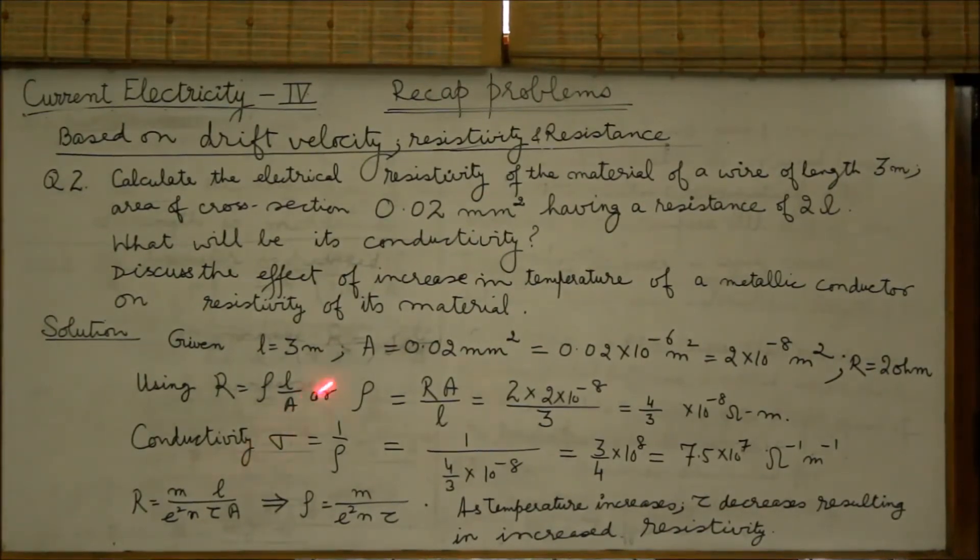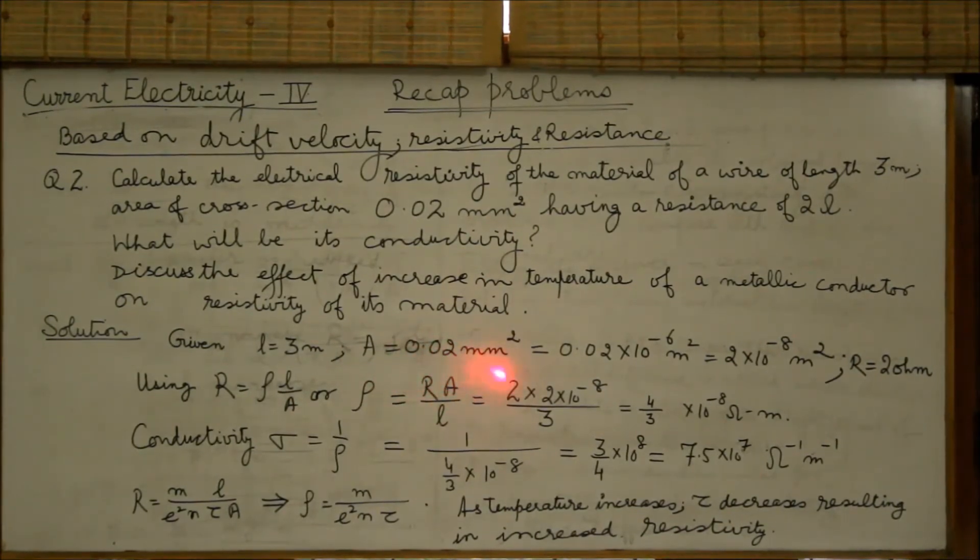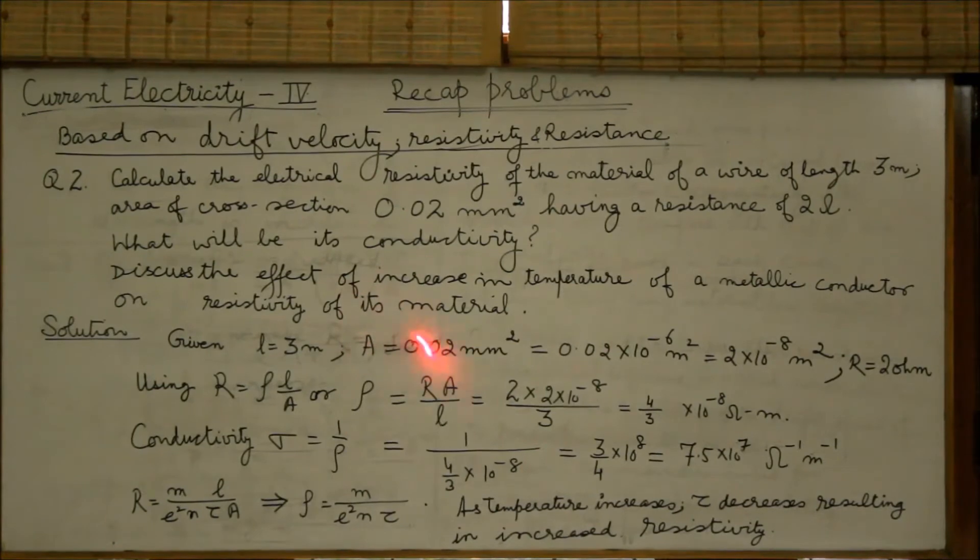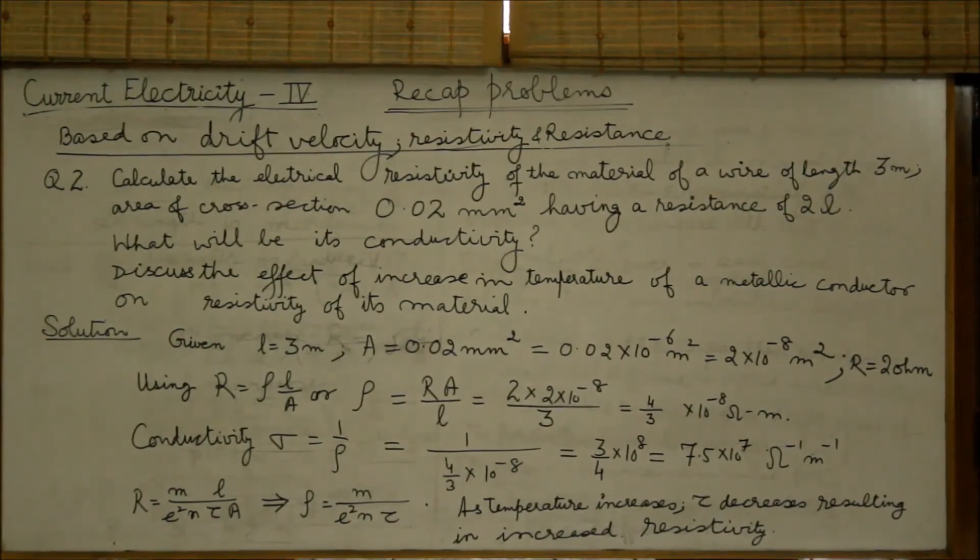Here, we are given length to be 3 meters. Area of cross-section is 0.02 millimeter square. Note that this area is not in SI units, so we will convert it and express it in SI system before we proceed further.